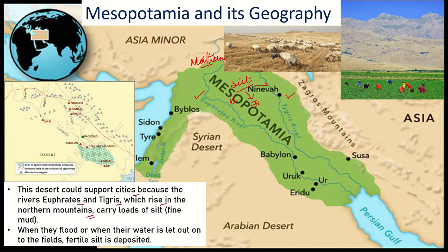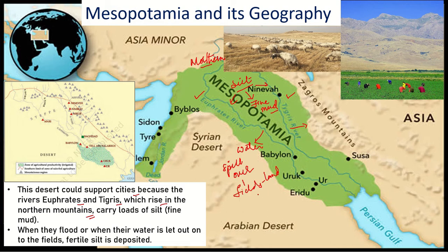Silt is nothing but fine soil or mud which is carried by both rivers. When flooding happens from the Euphrates or the Tigris, the floods cause the water in the river to spill over onto the fields. Along with this overflow, silt is also brought onto the land, and that fertile silt gets deposited in the fields due to these floods.